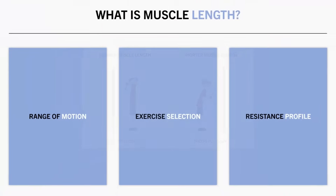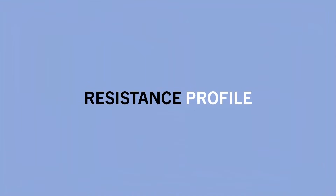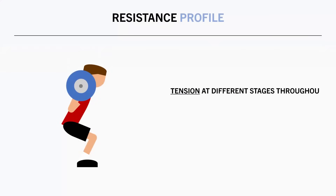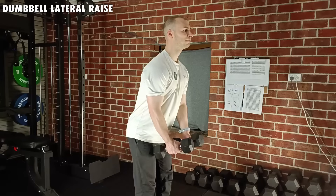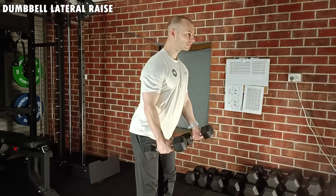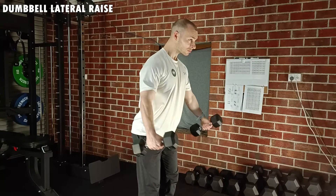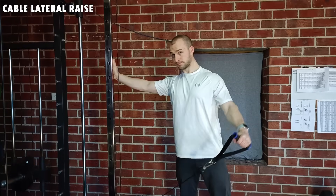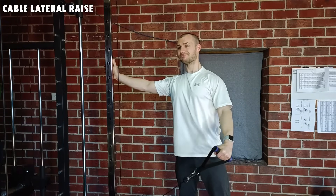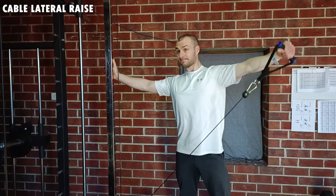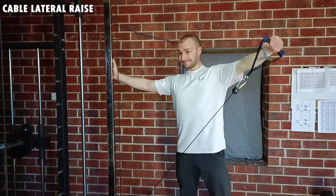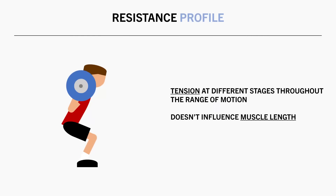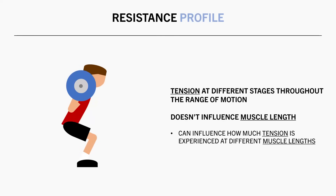The third variable is the resistance profile of the exercise. This refers to the amount of tension during the exercise at different parts throughout the range of motion. An example of an exercise with a fairly extreme resistance profile is a dumbbell lateral raise, which has almost no resistance in the bottom position and far more resistance in the top position. Whereas a cable lateral raise can bias more tension in the bottom position and less in the top depending on the specific setup and execution. Technically, the resistance profile doesn't actually influence how much a muscle is lengthened during an exercise, but it does influence how much tension the muscle experiences at different muscle lengths.